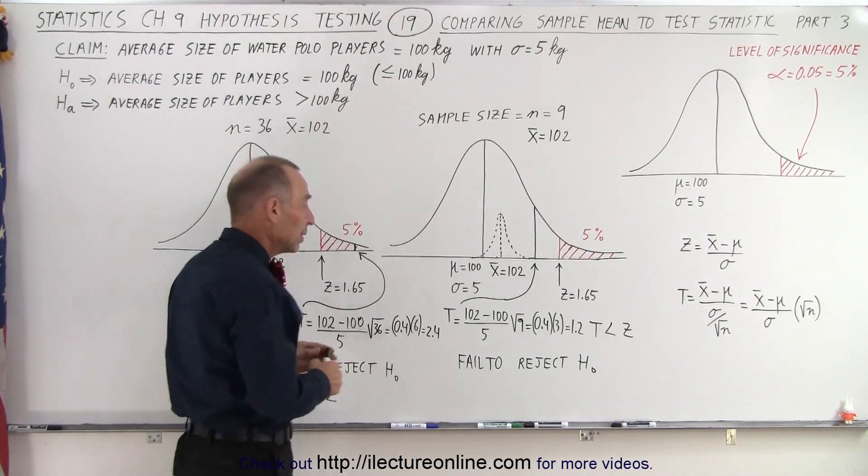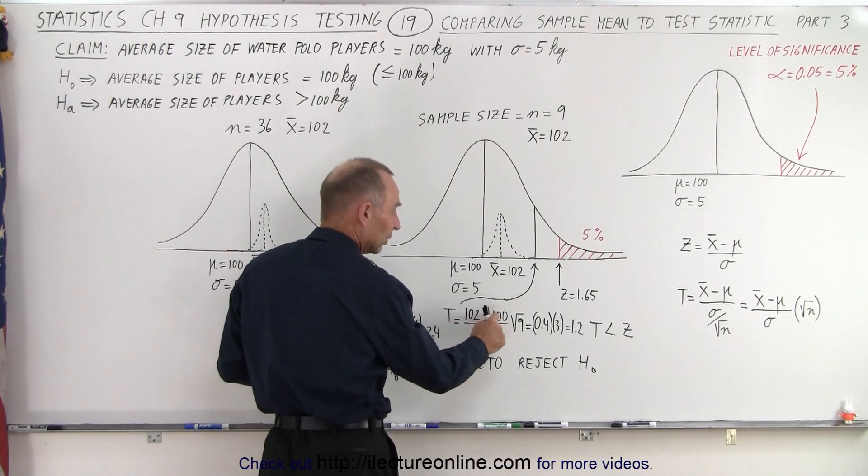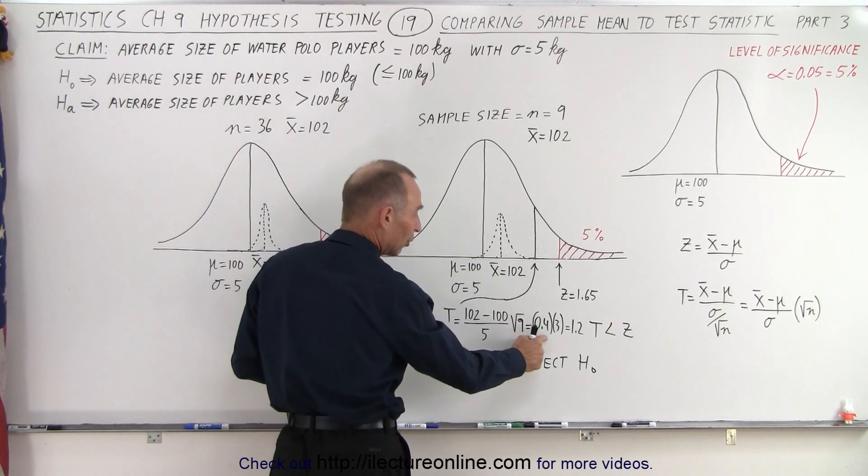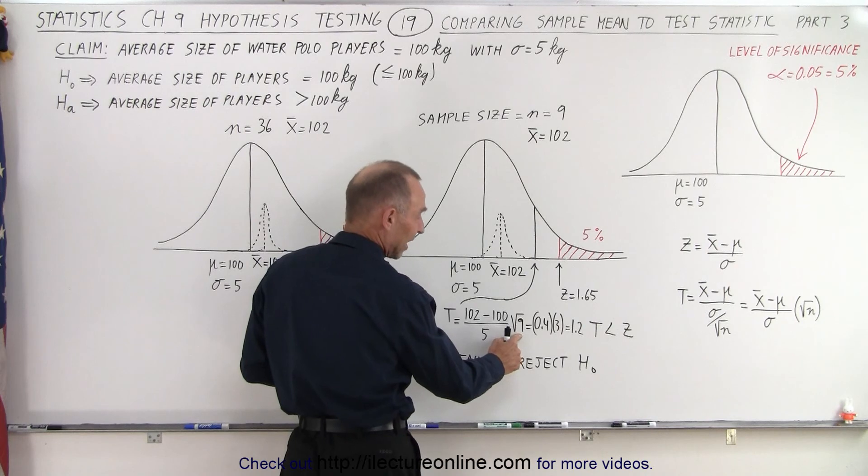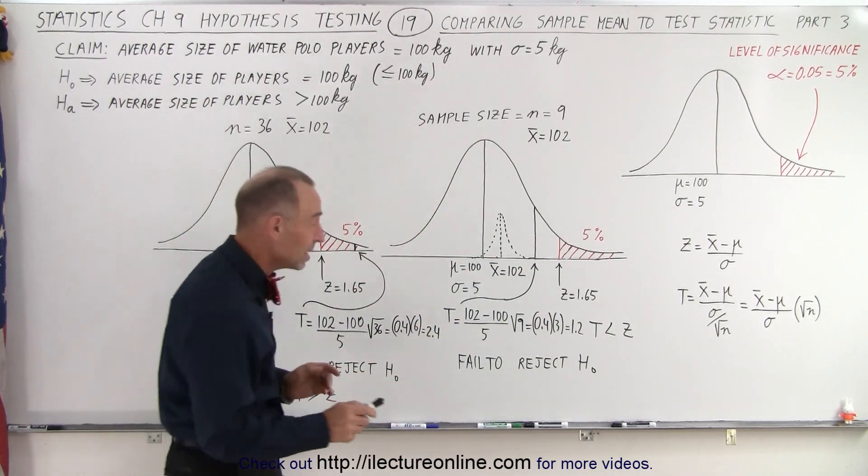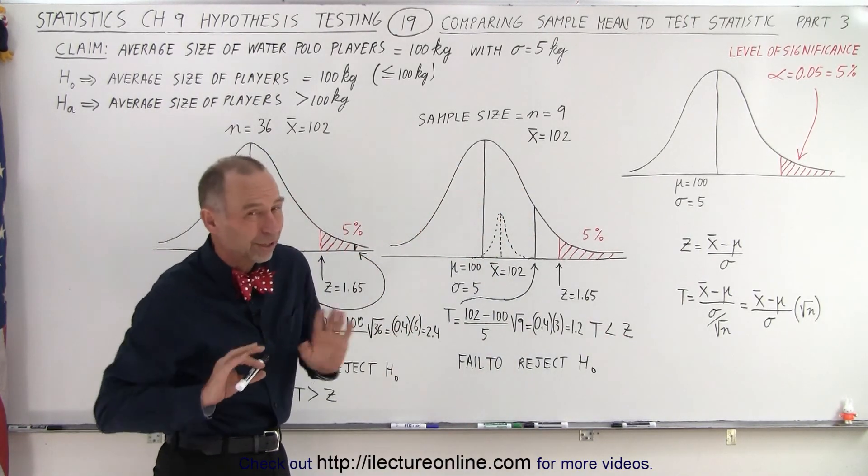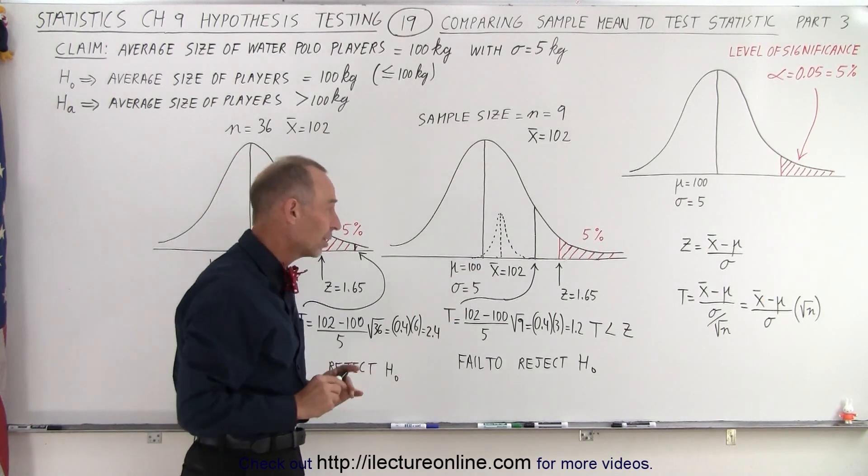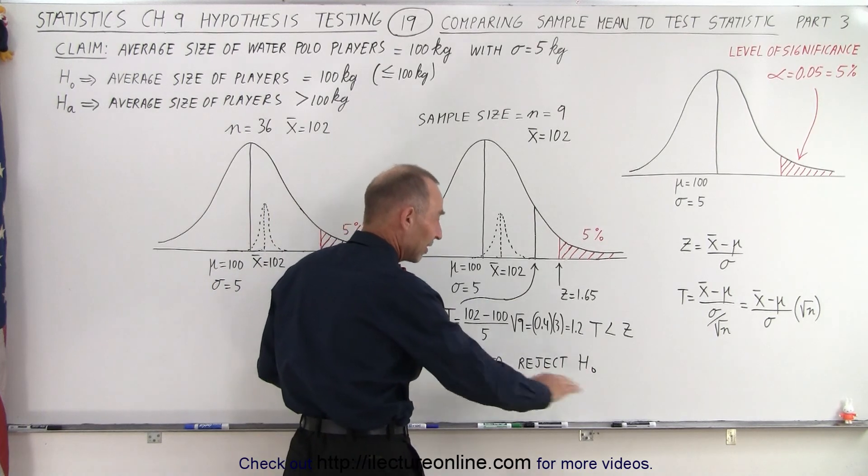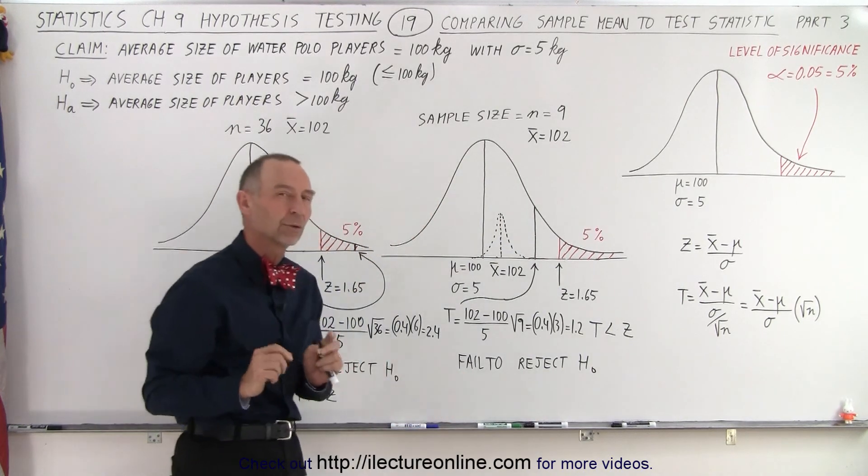Let's find out. We recalculated the test statistic. Notice that the difference now is between 102 and 100 which is 2, divided by the standard deviation which is 0.4 times the square root of the sample size of 9 which is 3, and we get a test statistic equal to 1.2, which means that the test statistic is smaller than the z-score. If it's smaller, it didn't make it into the critical region and therefore we're not going to reject the null hypothesis. We failed to reject it because the test statistic did not move into the critical region.